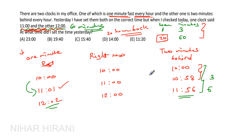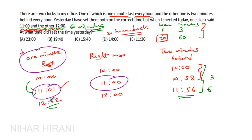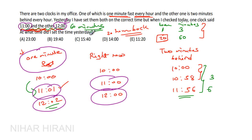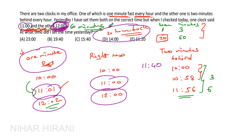Now let us think further. In 20 hours, the one-minute-fast clock will be how many minutes ahead of the actual time? If you observe, it is 1 minute ahead after one hour, 2 minutes ahead after two hours. So in 20 hours the fast clock will be 20 minutes ahead. Therefore the actual time right now is 11:40, because the fast clock shows 12 and it is 20 minutes ahead.